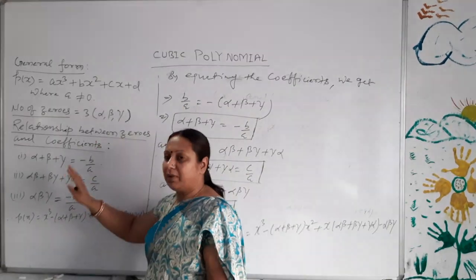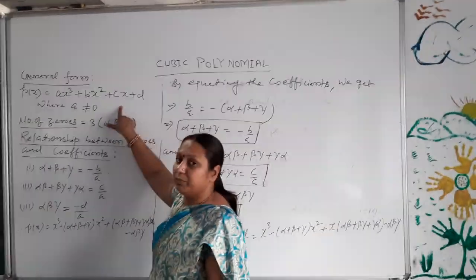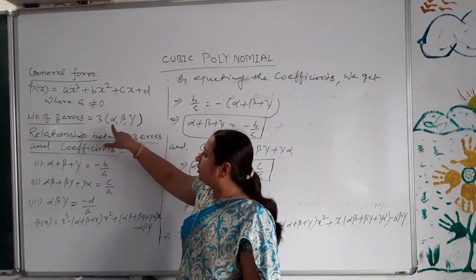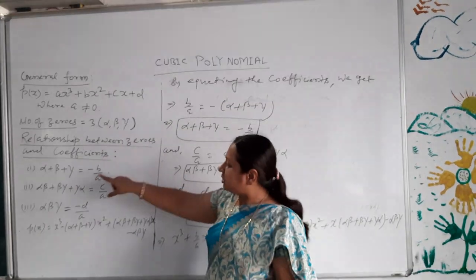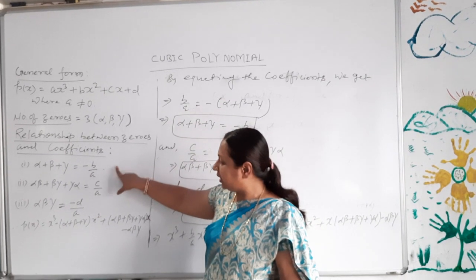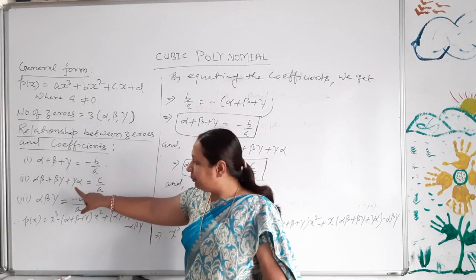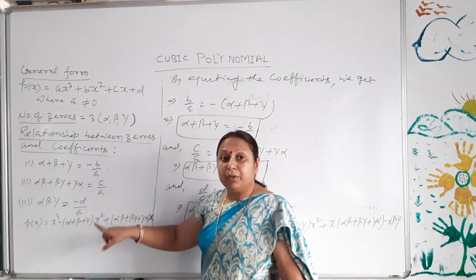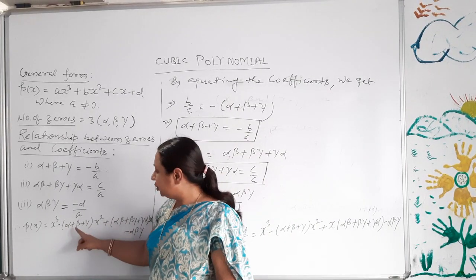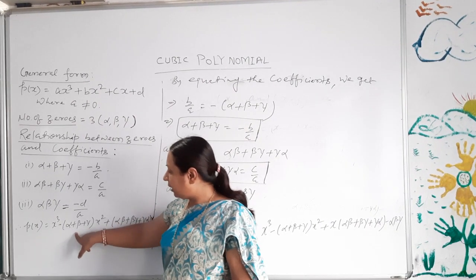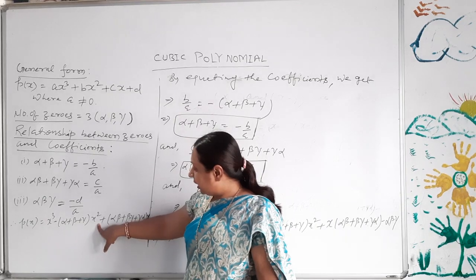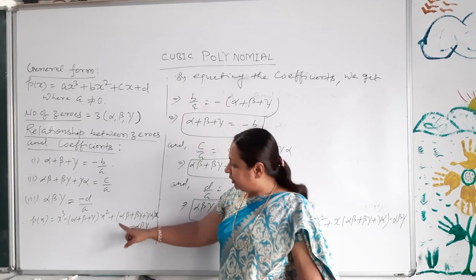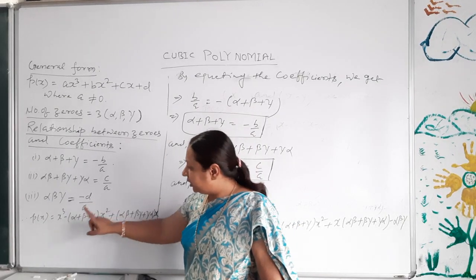Students, please remember: the general form of a cubic polynomial is ax³ + bx² + cx + d, where a ≠ 0. The number of zeros is 3. The relationships are: alpha + beta + gamma = −b/a (sum of zeros); alpha·beta + beta·gamma + gamma·alpha = c/a (sum of products taken two at a time); alpha·beta·gamma = −d/a (product of zeros). Given zeros alpha, beta, gamma, the polynomial is p(x) = x³ − (alpha + beta + gamma)x² + (alpha·beta + beta·gamma + gamma·alpha)x − alpha·beta·gamma.